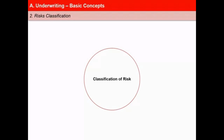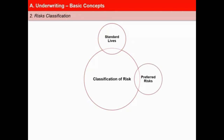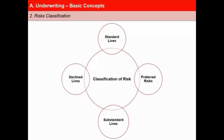There are four such risk classes. First are standard lives, whose anticipated mortality corresponds to the standard lives represented by the mortality table. Second is preferred risks — those whose anticipated mortality is significantly lower than standard lives and hence can be charged a lower premium. Third is substandard lives — those whose anticipated mortality is higher than average but are still considered insurable. And fourth is declined lives — those whose impairments and anticipated extra mortality are so great that they cannot be provided insurance coverage at an affordable cost.